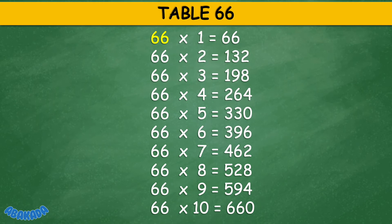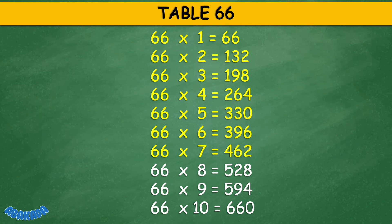Table 66: 66 times 1 equals 66, 66 times 2 equals 132, 66 times 3 equals 198, 66 times 4 equals 264, 66 times 5 equals 330, 66 times 6 equals 396, 66 times 7 equals 462, 66 times 8 equals 528, 66 times 9 equals 594, 66 times 10 equals 660.